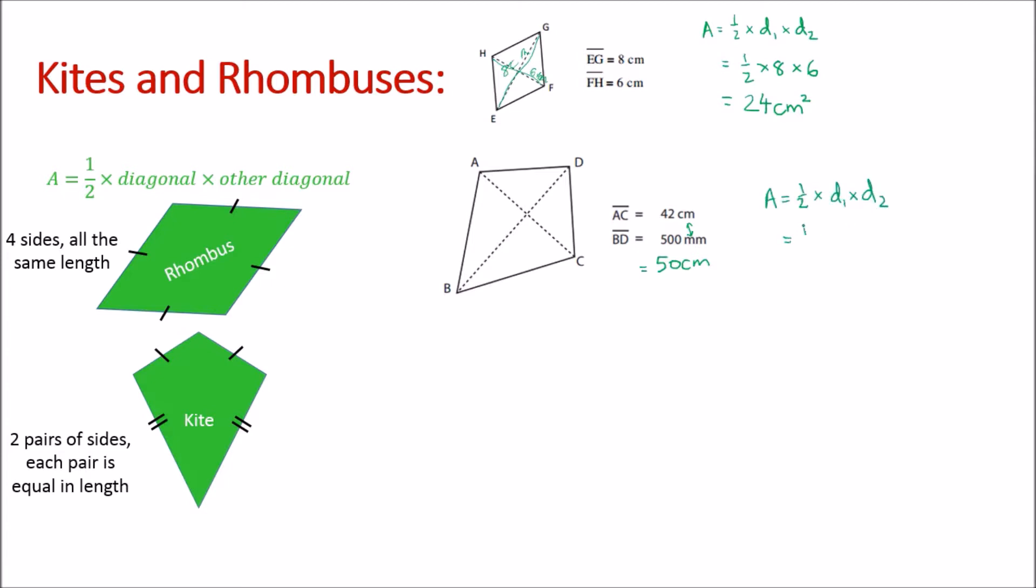So let's write our formula, and now we've got half times 42 times 50. This will give us 1050. We worked in centimeters and we've now looked at two dimensions: centimeters squared.